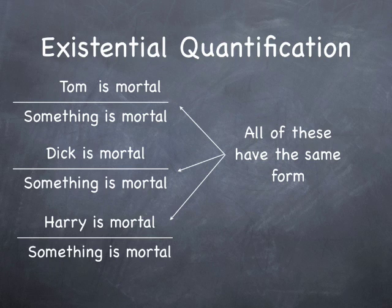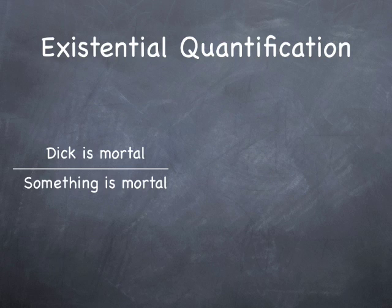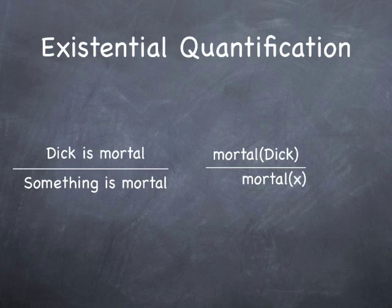So how do we do that? Well, let's take this pair: 'Dick is mortal, therefore something is mortal'. In order to make the patterns more plain, logic rewrites 'Dick is mortal' to look something like this: Mortal and then it puts Dick in parenthesis. And to say that something is mortal, well here's how it works. We take the Dick and we replace it with x. So we say mortal x. x is just a variable. And then in front of it we put this funny symbol. It's kind of a backwards E.